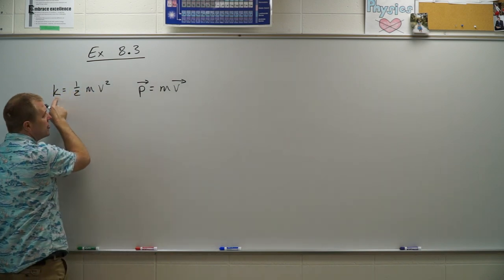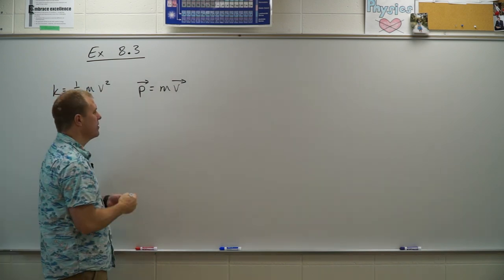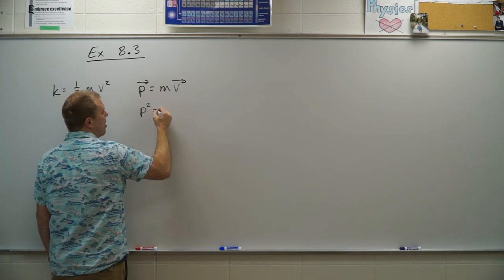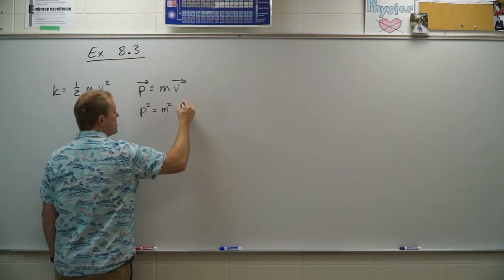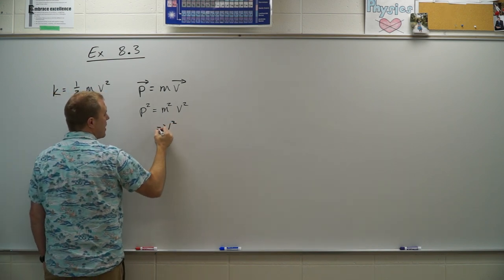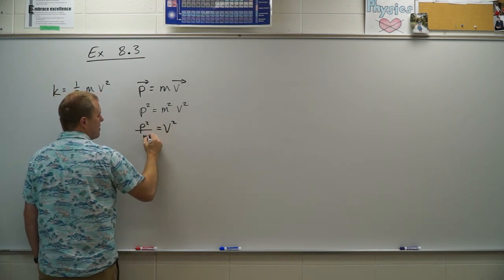Now the thing is kinetic energy is a scalar, momentum's a vector, so the first thing we're going to do is get rid of the direction and just talk about the magnitude. I'm going to square everything and this allows me to say that speed squared equals momentum squared divided by mass squared.